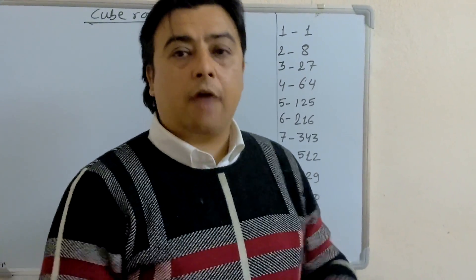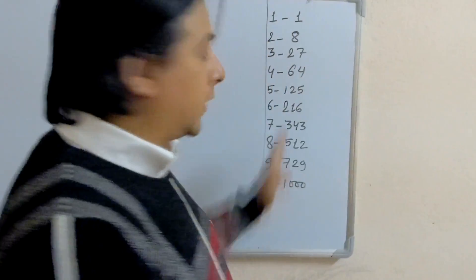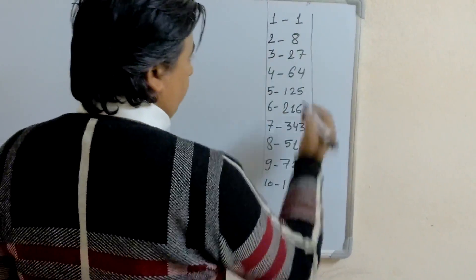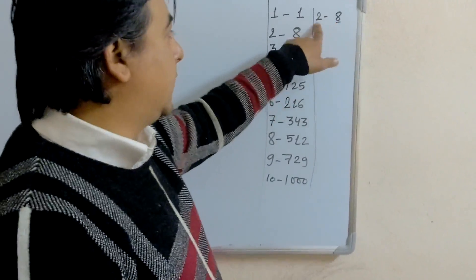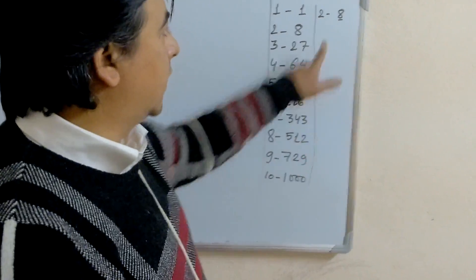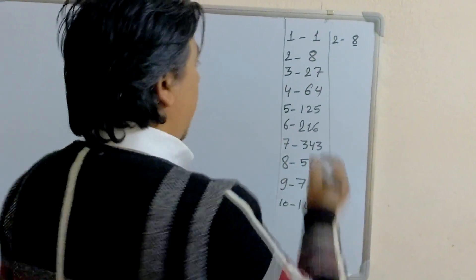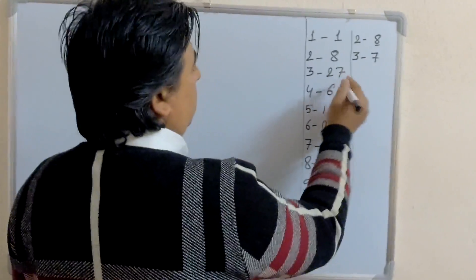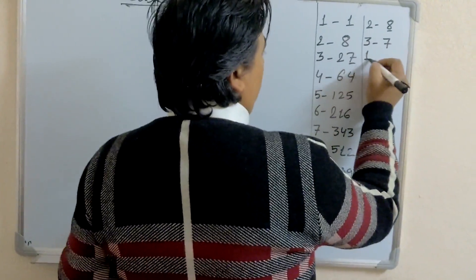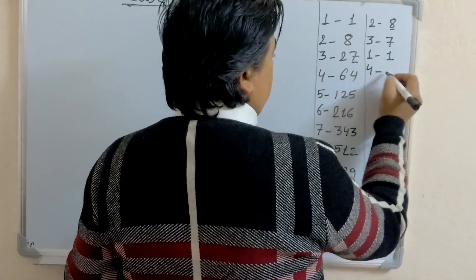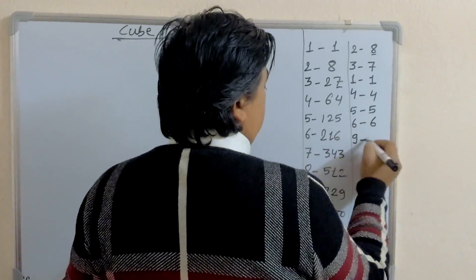After learning this, you have to know the last digit of these cube numbers. The cube of 2 has last digit 8, and the cube of 8 has last digit 2 — so 2 and 8 are paired. Similarly, 3 has last digit 7, and 7 has last digit 3. The others are the same: 1 last digit is 1, 4 last digit is 4, 5 last digit is 5, 6 last digit is 6, and 9 last digit is 9.